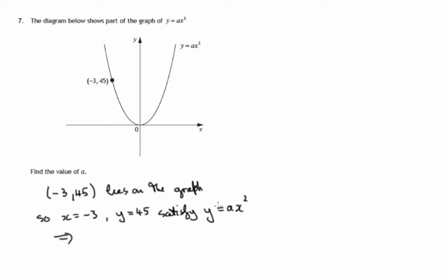So that would mean that the y-coordinate, 45, is a times the x-coordinate squared. That's negative 3 squared. Now we know that negative 3 times negative 3 is 9. 45 is something times 9, that's 5 times 9, 45. So a is 5. So the value of the letter a is 5.